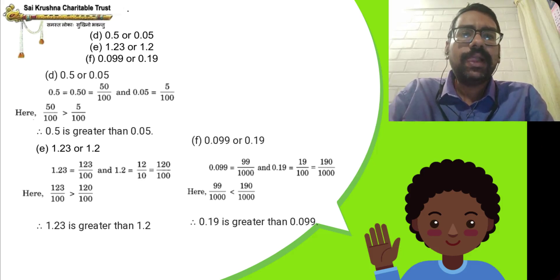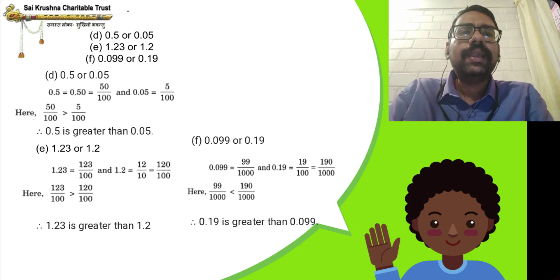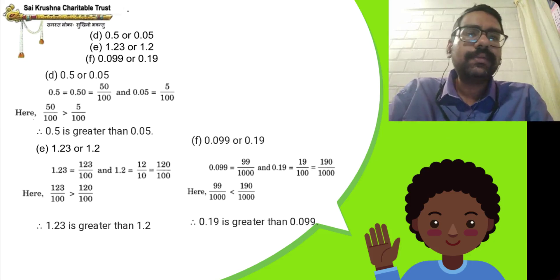Alternatively, 0.5 can be written as 5/10 and 0.05 as 5/100. Converting to like fractions, multiply 5/10 by 10/10 to get 50/100. Since 50 is greater than 5, therefore 0.5 is greater than 0.05.